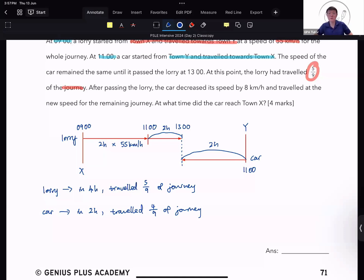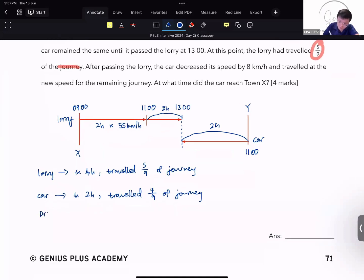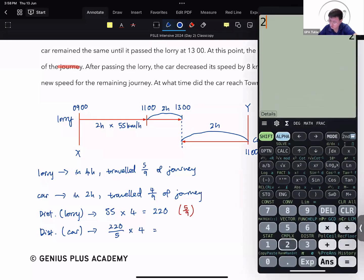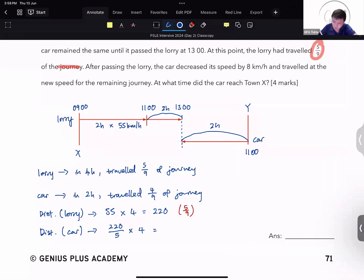And because we have the speed of the lorry, can we find the distance traveled by the lorry? We can. So distance traveled by the lorry in 4 hours, 55 km per hour times 4 hours to give you 220 kilometers. And you know that this is 5 out of 9. Which means you can now calculate the distance traveled by the car. Because you take 220, which is 5 units. So you divide by 5 and then you times 4.